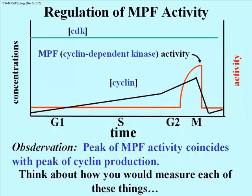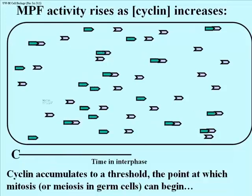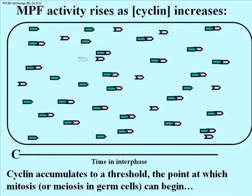Imagine how you might measure cyclin and CDK, as well as the maturation or mitosis promoting factor activity over the life of a cell. Now here's how cyclin acts to regulate MPF kinase activity. Cyclin levels rise from low levels just after cytokinesis, accumulating and binding to CDK subunits, eventually reaching a threshold concentration as the next mitosis approaches.